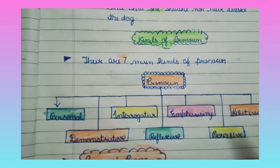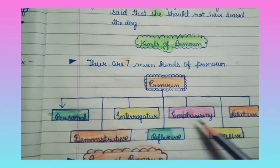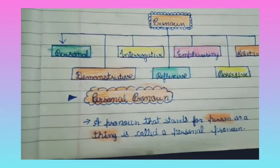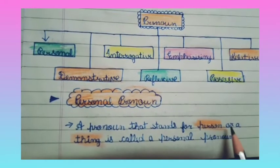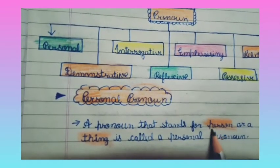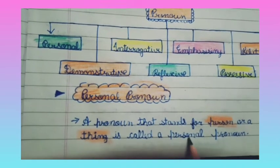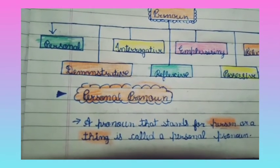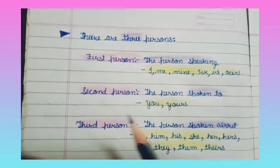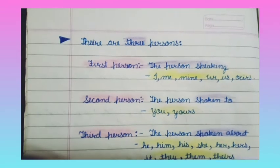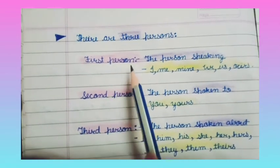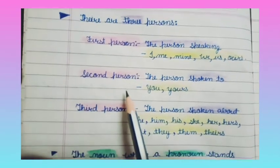In part two we will cover the remaining types. Let's start with personal pronoun. A pronoun that stands for a person or a thing is called a personal pronoun. There are three types of person: first person, second person, and third person.